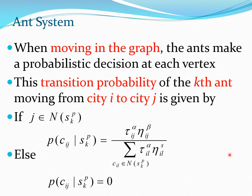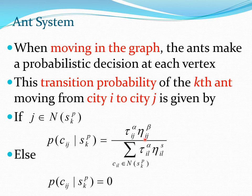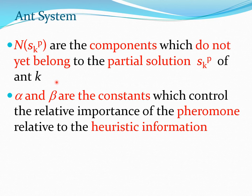When the ants move along the graph they make a probabilistic decision at each vertex, which corresponds to a city. The transition probability of the kth ant moving from city_i to city_j is given by this formula — the probability of choosing path c_ij is tau times the heuristic value, divided by the summation of that quantity. If j is a subset of N_skp, you choose this probability; otherwise the probability is 0, where N_skp are the components not yet belonging to the partial solution of ant k. Alpha and beta are constants controlling the relative importance of pheromone versus heuristic information.